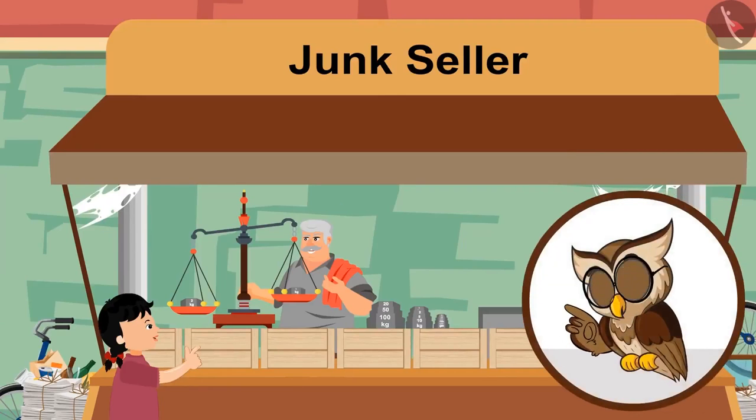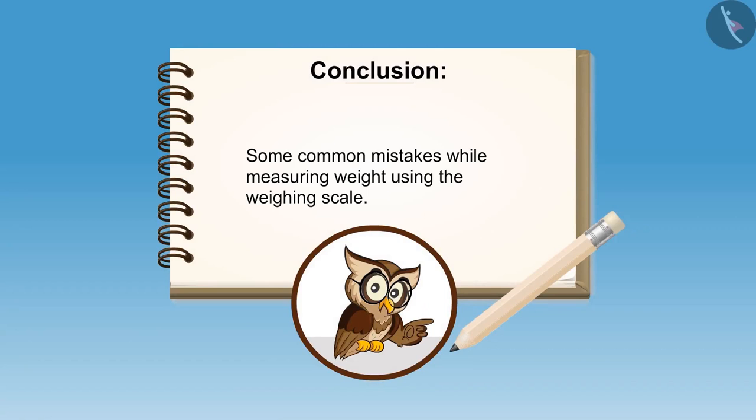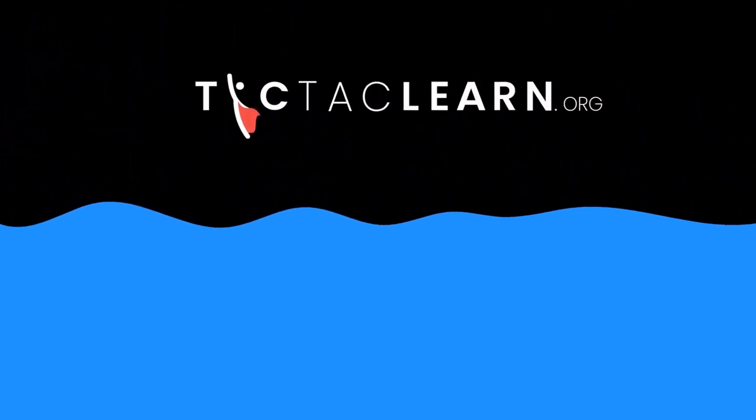So, kids, have you understood? In weighing scale, heavier weight moves downwards, and lighter weight moves upwards. In this video, we have learnt about some common mistakes while measuring weight using the weighing scale.